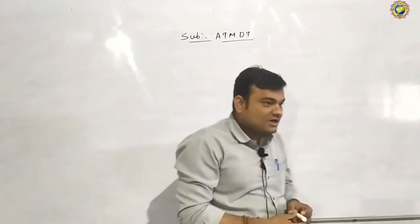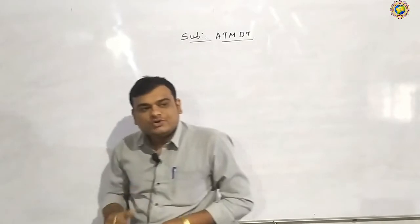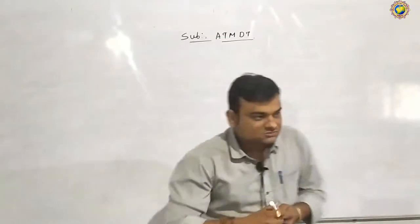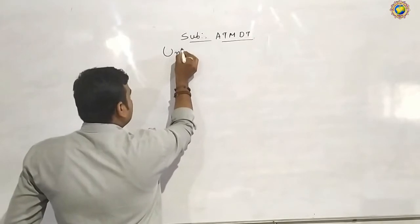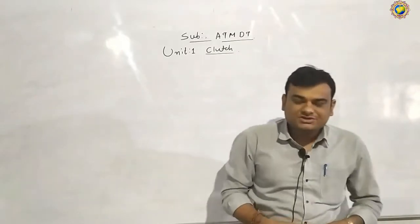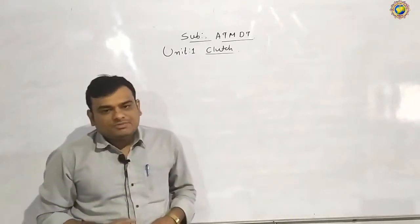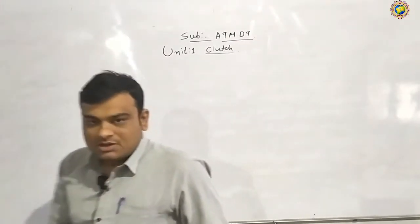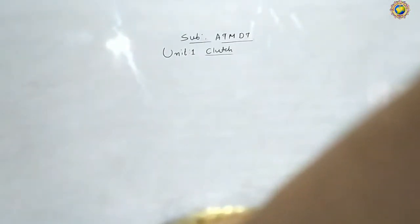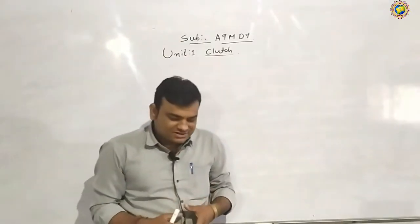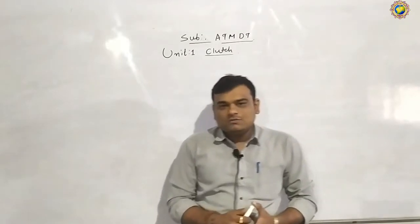In the previous lecture, we were already discussing about the troubleshooting of clutch. Last lecture in Unit 1, we started with clutch information from the PPT presentation, then types of clutch, and then the rectification and reconditioning of the clutch parts.